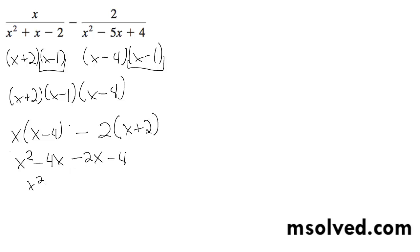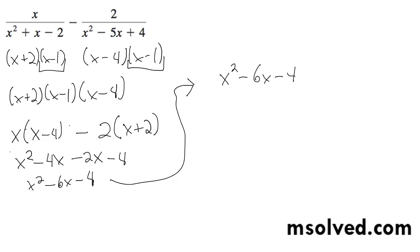So that simplifies to x squared minus 6x minus 4. This becomes x squared minus 6x minus 4, over the quantity x plus 2, x minus 1, x minus 4. That's it.